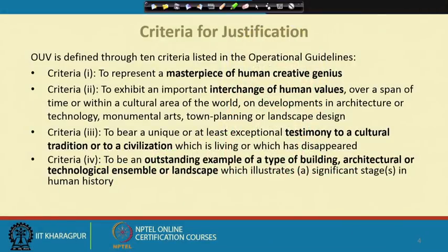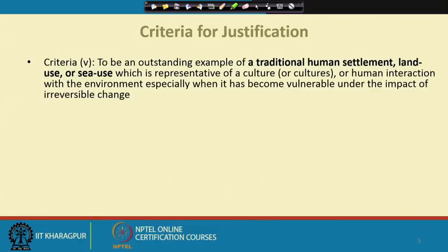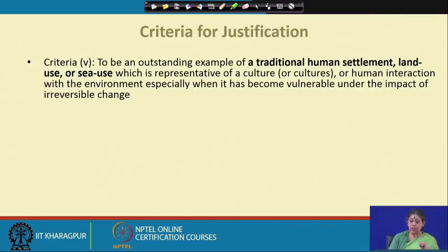Criteria four: to be an outstanding example of a type of building, architectural or technological ensemble, or landscape which illustrates significant stages in human history. Criteria five: to be an outstanding example of a traditional human settlement, land use or sea use, which is representative of a culture or cultures, or human interaction with the environment, especially when it has become vulnerable under the impact of irreversible change.